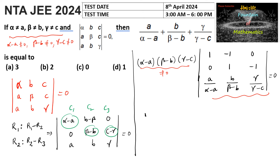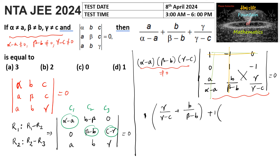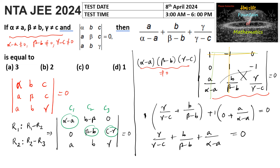Expanding the determinant: 1 times (1 · gamma/(gamma - c) - (-1) · b/(beta - b)) minus 0 plus a/(alpha - a) times a corresponding minor gives us: gamma/(gamma - c) + b/(beta - b) + a/(alpha - a) = 0. Therefore, a/(alpha - a) + b/(beta - b) + gamma/(gamma - c) = 0, which is the answer — option C.